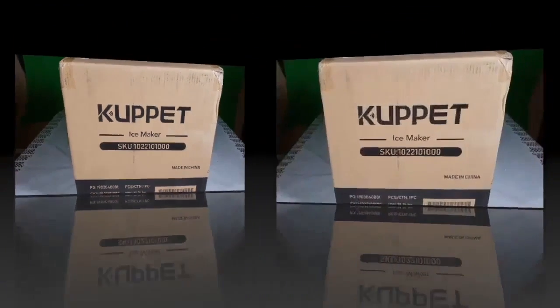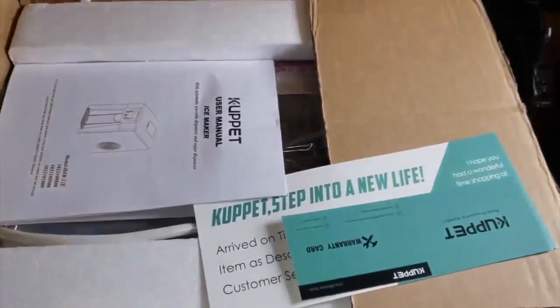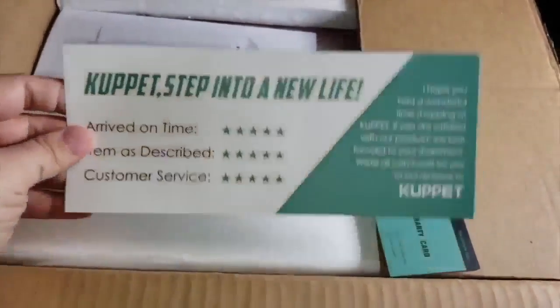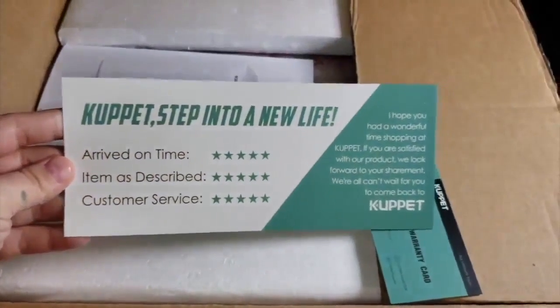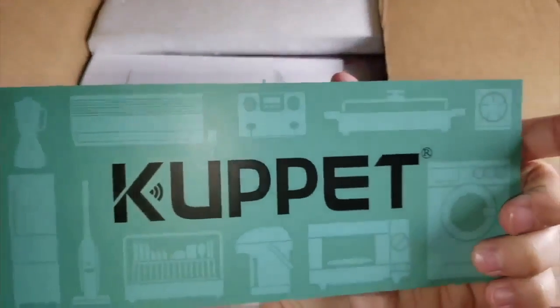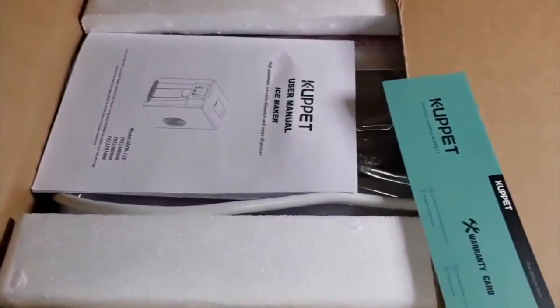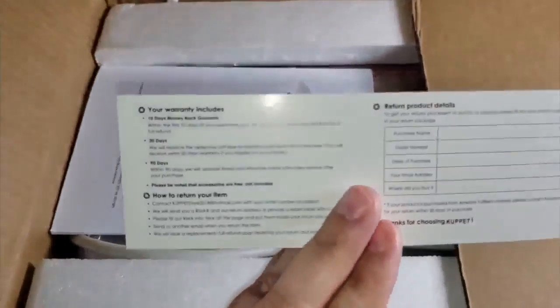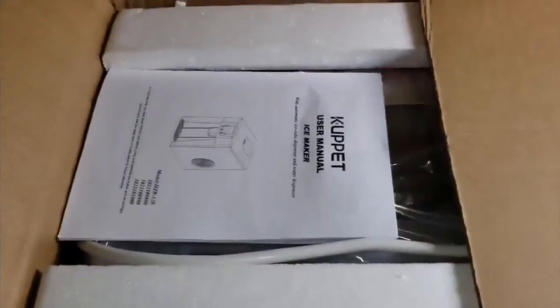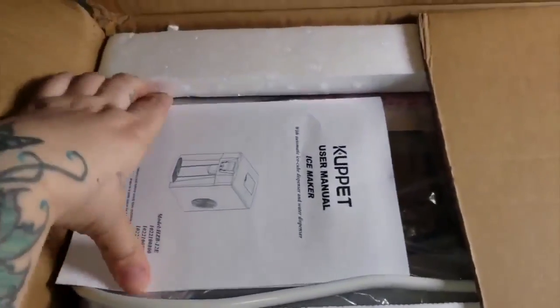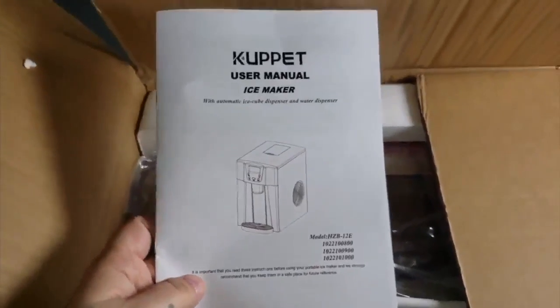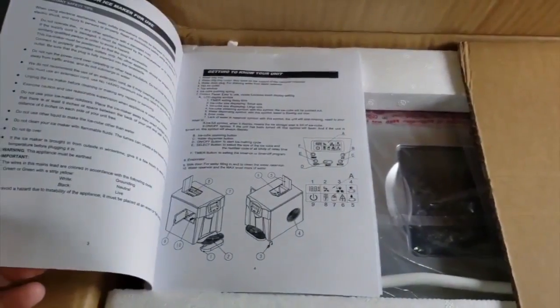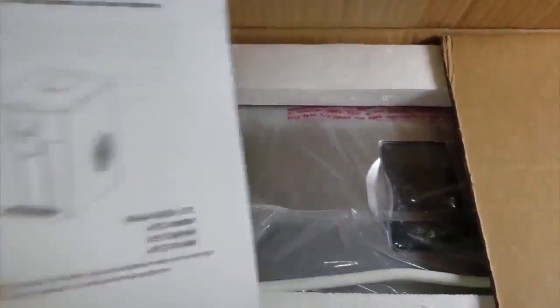Right here, this is just the ratings so you can give good feedback on it for arrived on time, as described, and customer service. It's by Kuppet. Right here is your warranty card. Just go ahead and fill this out and send it to Kuppet. They offer a one-year warranty on this product. Right here is your owner's manual. This will tell you how to set it up, how to use it, how to fill up the ice, and how to receive the ice.